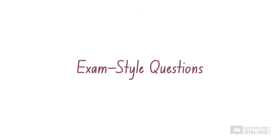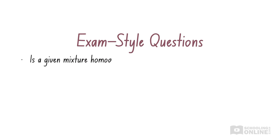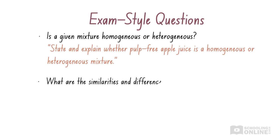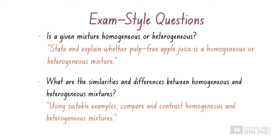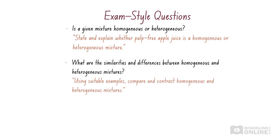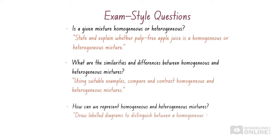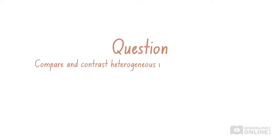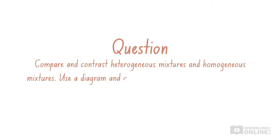Let's pause for a moment to look at the types of questions you could be asked in exams. Questions will ask things like: Is a given mixture homogeneous or heterogeneous? What are the similarities and differences between homogeneous and heterogeneous mixtures? And how can we represent homogeneous and heterogeneous mixtures? The answers for each question may vary, especially if you are asked about specific mixtures. Now, let's look at a sample question: Compare and contrast heterogeneous mixtures and homogeneous mixtures. Use a diagram and an example for each type of mixture to illustrate your answer.